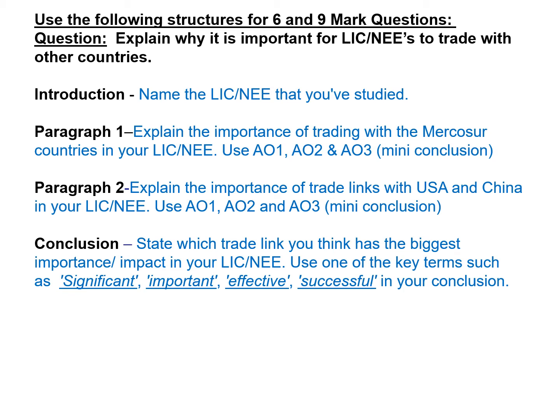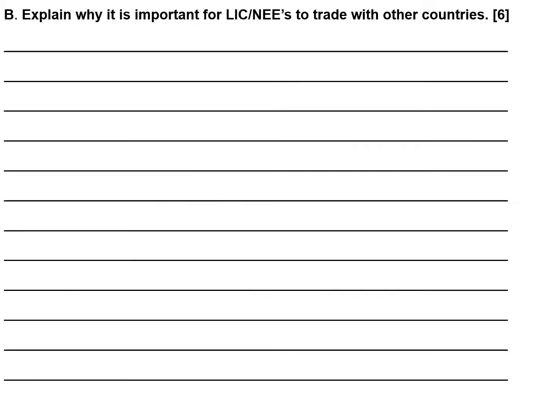Your structure: introduction, then paragraph one — explain why it's important to trade with other Mercosur countries. Mercosur is a trading group in South America, a little like the EU for European countries. Paragraph two — explain the importance of trade links with the USA and maybe China. Then your conclusion — include the words significant, important, effective, or successful, whichever is most applicable. Here's the space you would have to answer this — not a lot of space, so get straight in there to answer the question.